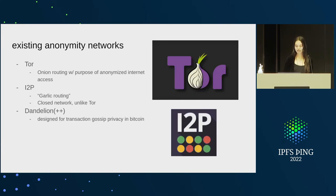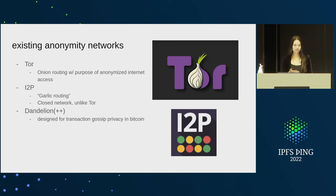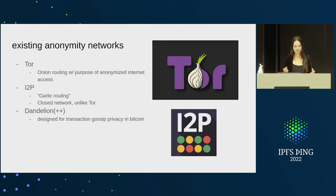Looking at some existing anonymity networks — there's Tor, which uses just onion routing, and its main purpose is anonymizing internet access. It doesn't really apply directly to IPFS or LibP2P since it's not peer-to-peer. You enter the network, find your circuit from directory nodes, and access the internet that way. It's well known and popular.